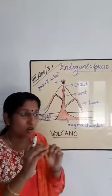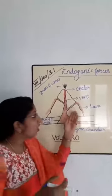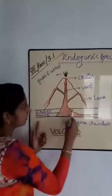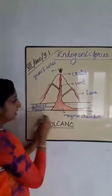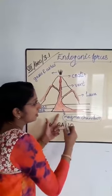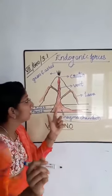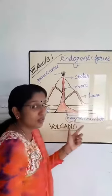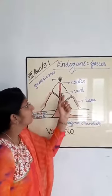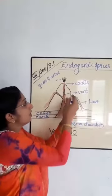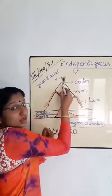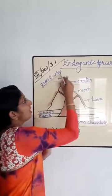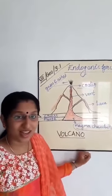A volcano is a vent — that is, an opening — on the Earth's crust. You can see the crust, the mantle area, the magma chamber, and the magma. From the vent, lava flows upward. This opening phase also releases gases and ashes.